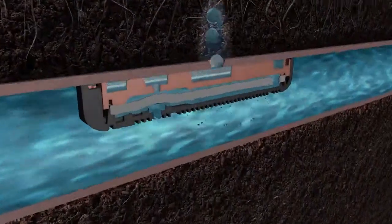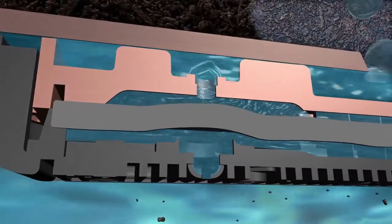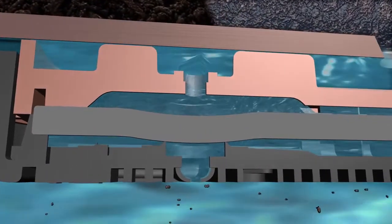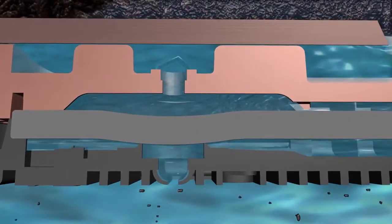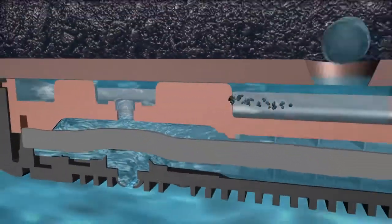Each Uniram XR emitter is equipped with a built-in anti-siphon feature that prevents debris ingestion by sealing the emitter outlet during system shutdown. And the continuous self-flushing mechanism eliminates debris that enters the system.